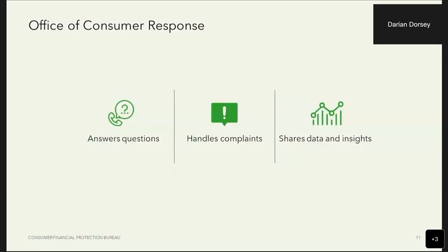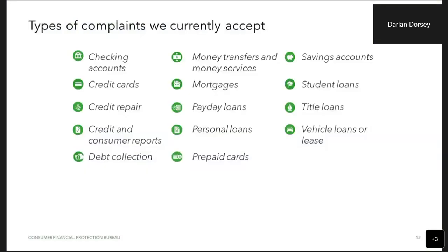We always like to break things down in a way that rolls off the tongue a little easier. That would be: we answer consumers' questions, we handle consumers' complaints, and we share data and insights — that's how we think of our work in these three buckets. A lot of the answering of questions happens over the telephone. You can see our 855 toll-free number on our website, where we answer questions from consumers who may not have internet access or just want to talk to a real person. Sharing data and insights will be the main focus for today's conversation — how we share data through our consumer complaint database.